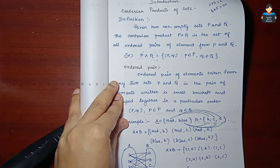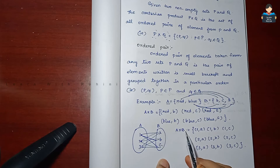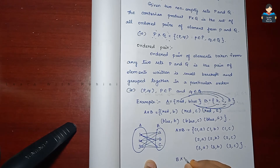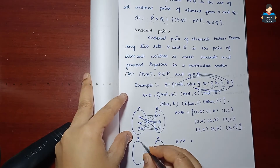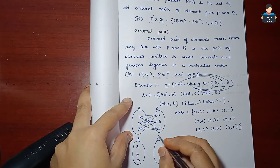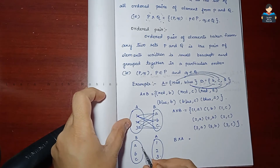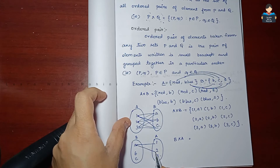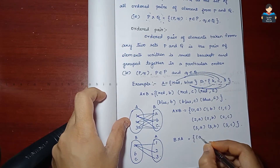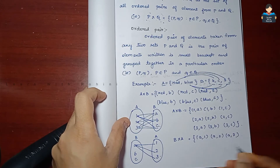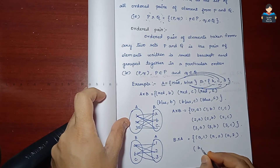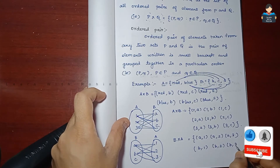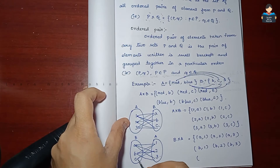Continuing: (3,A), (3,B), (3,C). Now for B cross A: (A,1), (A,2), (A,3), (B,1), (B,2), (B,3), (C,1), (C,2), (C,3).